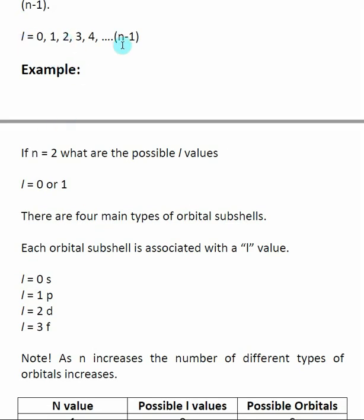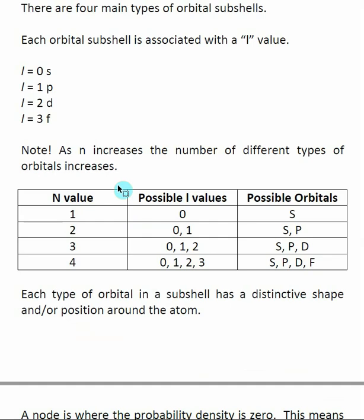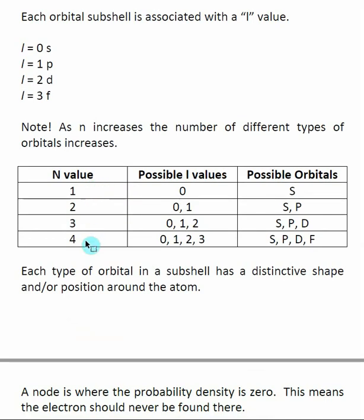Because l is determined by n, as the n value increases we have the possibility of more types of orbitals. For n equals one, there is only one possible l value: zero. For n equals two, possible l values are zero and one. For n equals three, it's zero, one, or two. For n equals four, it's zero, one, two, and three. These l values correspond to types of orbitals.